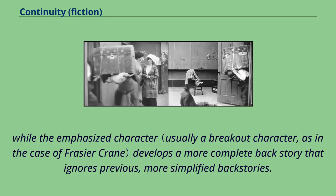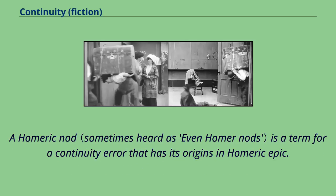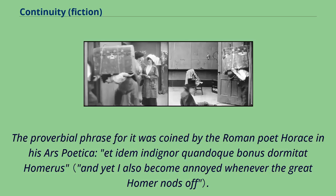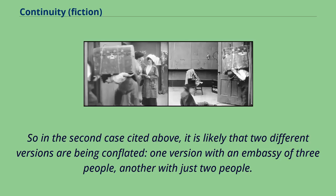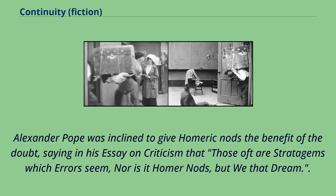A Homeric nod is a term for a continuity error that has its origins in Homeric epic. The proverbial phrase for it was coined by the Roman poet Horace in his Ars Poetica: "et idem indigner quondam bonus dormitat Homerus." There are numerous continuity errors in Homer that can be described as nods. In modern Homeric scholarship, many of Homer's nods are explicable as the consequences of the poem being retold and improvised by generations of oral poets. Alexander Pope was inclined to give Homeric nods the benefit of the doubt, saying in his essay on criticism that those oft are stratagems which errors seem, nor is it Homer nods, but we that dream.